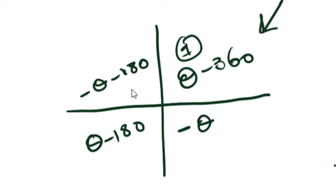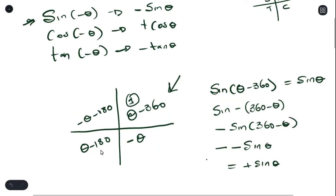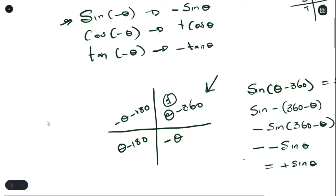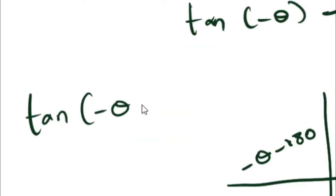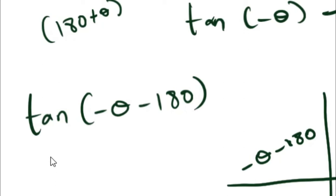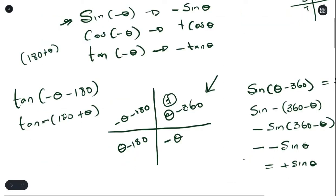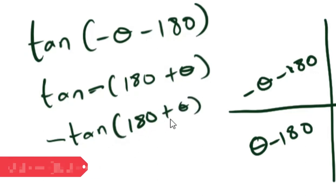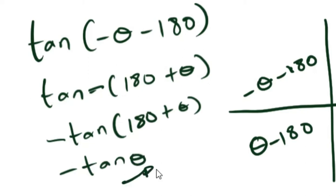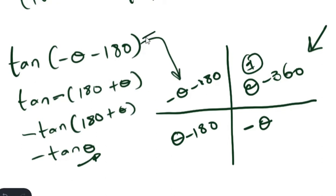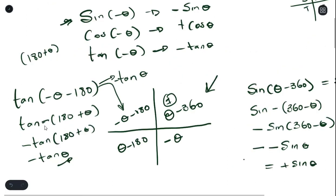If you remember your negative quadrant equations it can serve you well, but if you cannot remember them, try to bring out a negative. For example, tan of (negative theta minus 180) looks like 180 plus theta. Bring out a negative, and since negative tan of negative theta is negative tan theta — and tan is positive in the third quadrant because that's 180 plus theta — you get tan theta as your final answer. Those are two ways to treat questions like this.